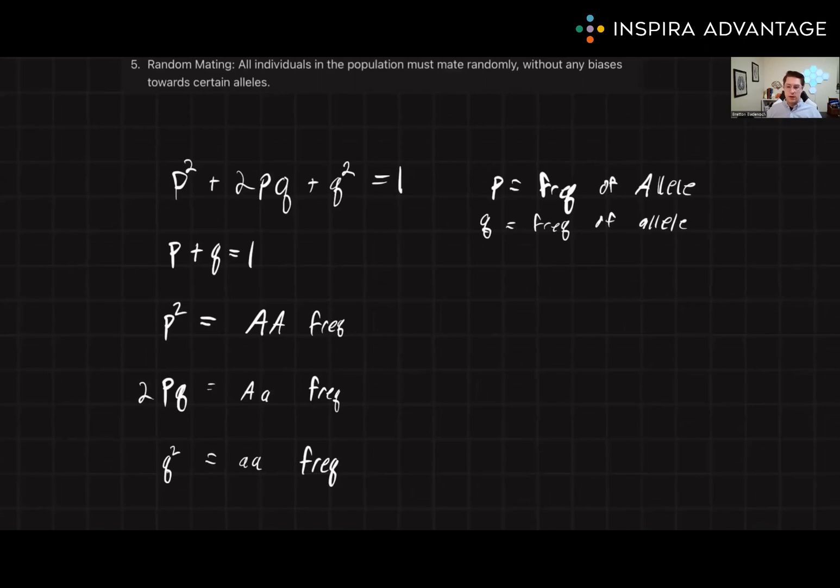By using these equations, it is possible to calculate the frequency of alleles in a population and how they may change over time given certain assumptions.